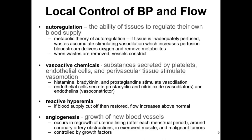Local control of blood pressure and flow is called autoregulation — it's the ability of tissues to regulate their own blood supply. They produce some factors that will constrict or dilate their vessels, mostly arterioles and capillaries. The metabolic theory of autoregulation states that if tissue is inadequately perfused, waste accumulates, stimulating vasodilation, which increases perfusion. Because if we have some ischemia — ischemia is inadequate perfusion of tissue — we activate dilation, and dilation leads to more oxygen in this tissue.